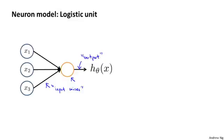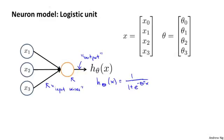Or in a biological neuron, this was the axon. And whenever I draw a diagram like this, what this means is that this represents a computation of h of x equals one over one plus e to the negative theta transpose x, where as usual x and theta are our parameter vectors. So this is a very simple, maybe vastly oversimplified model of the computation that a neuron does, where it gets a number of inputs x1, x2, x3 and outputs some value computed like so.